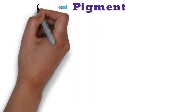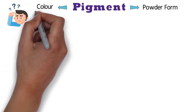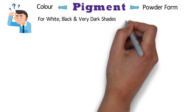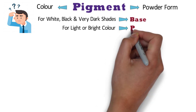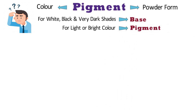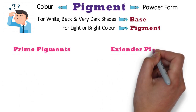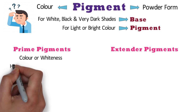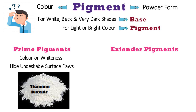Pigment means color and it is in powder form. Base and pigment — these two terminologies are confusing. In general, for white, black, and very dark shades, the base itself works as a coloring pigment. In the case of light or bright color, the desired shade is obtained by adding coloring pigment to white paint. There are two types of pigments: prime pigment and extender pigments. Prime pigments are responsible for color or whiteness in a paint and also hide undesirable surface flaws. Titanium dioxide is the main ingredient in prime pigments.